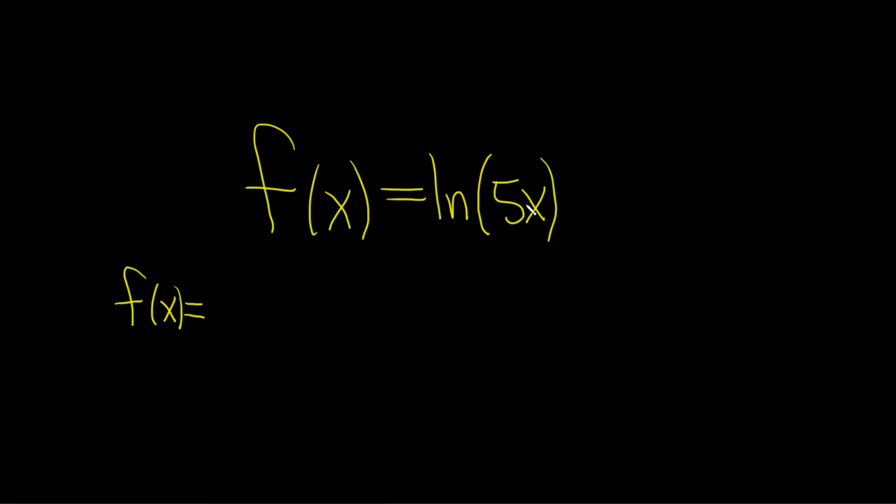So whenever you have the log of a product like this, you use what's called the product rule. The product rule says if you have the natural log of a times b, this is equal to the natural log of a plus the natural log of b.